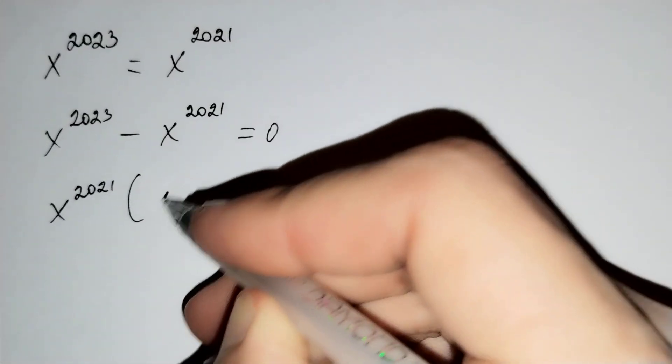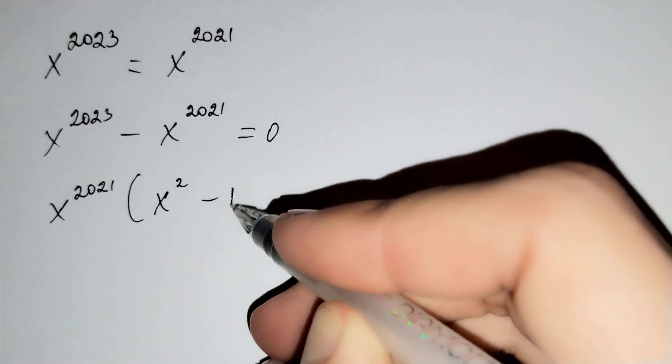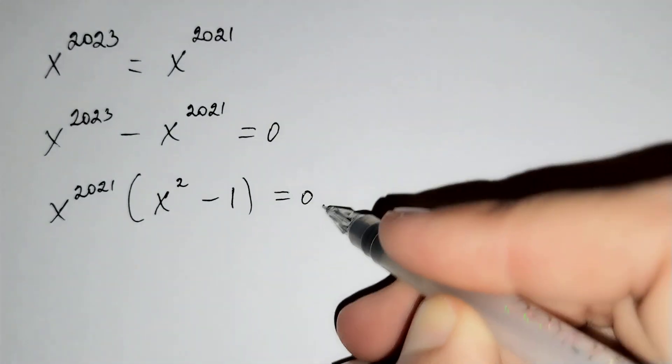And if we take x power 2021 out of the brackets, x power 2 remains here and minus 1 remains here equals to 0.